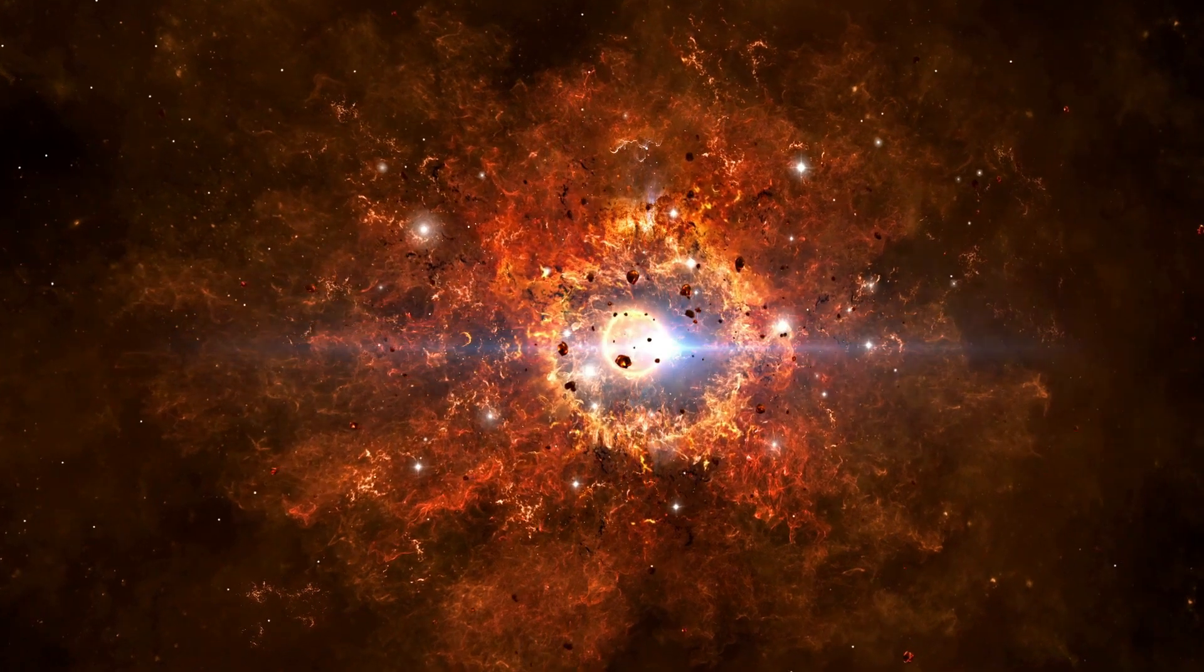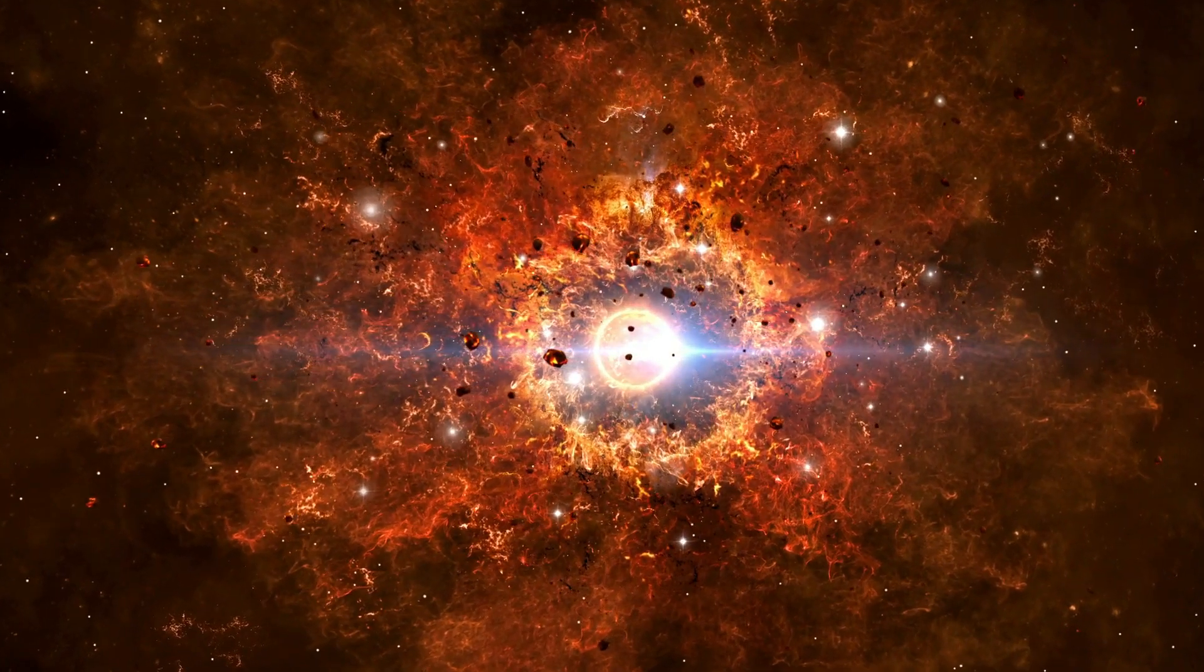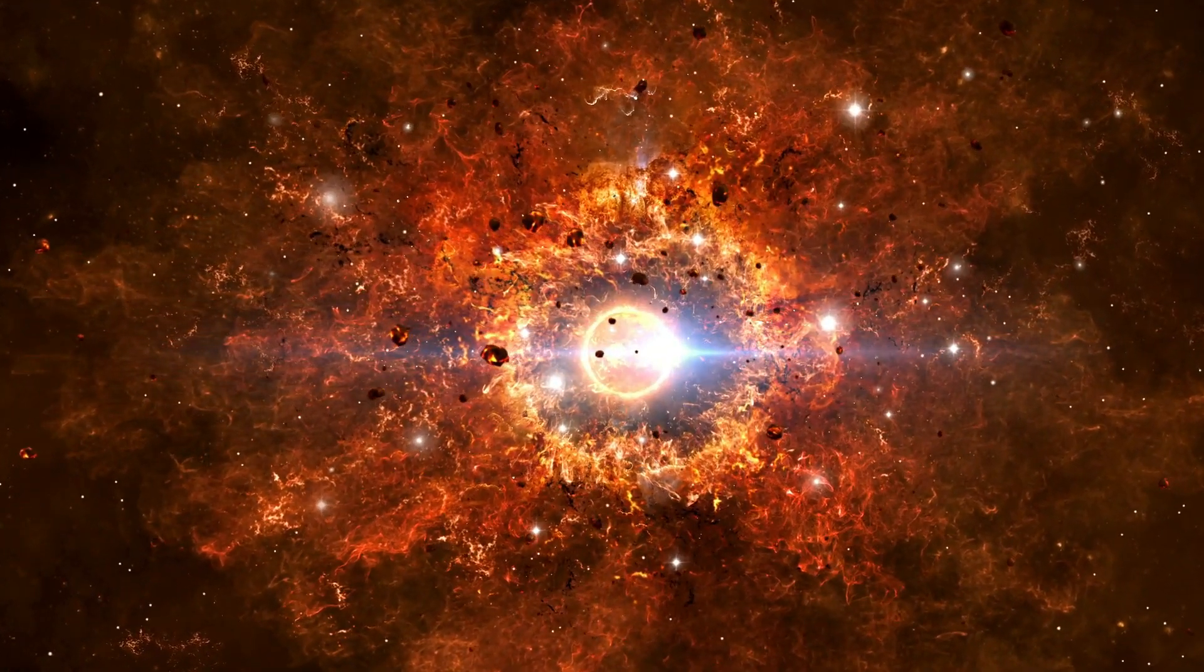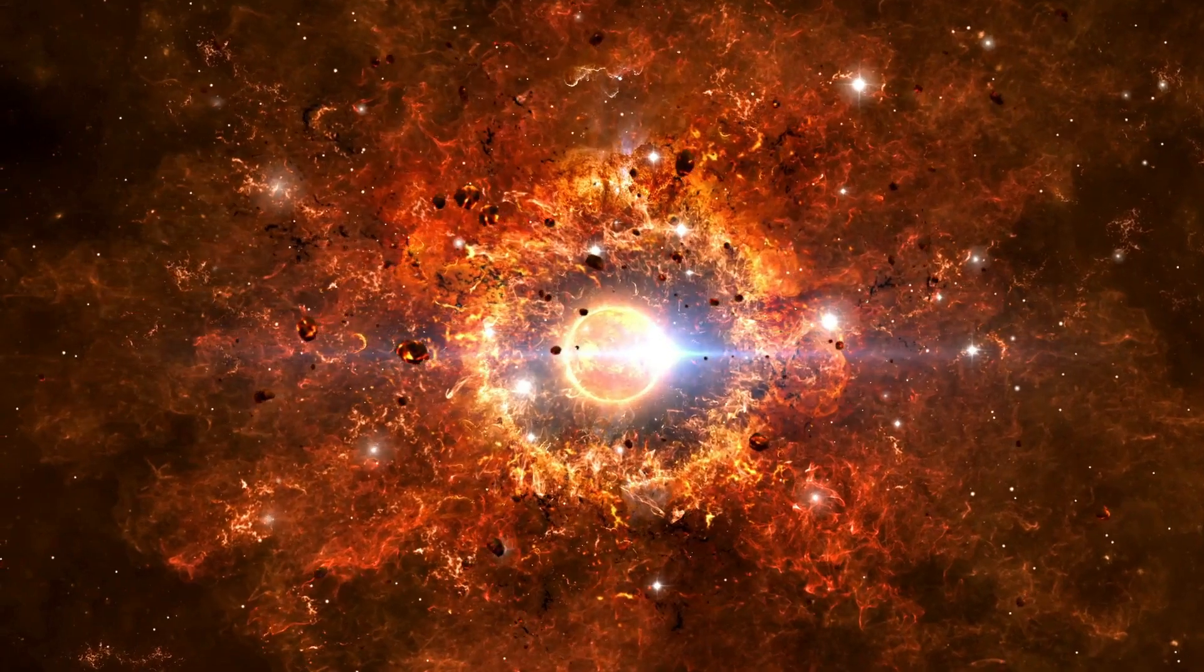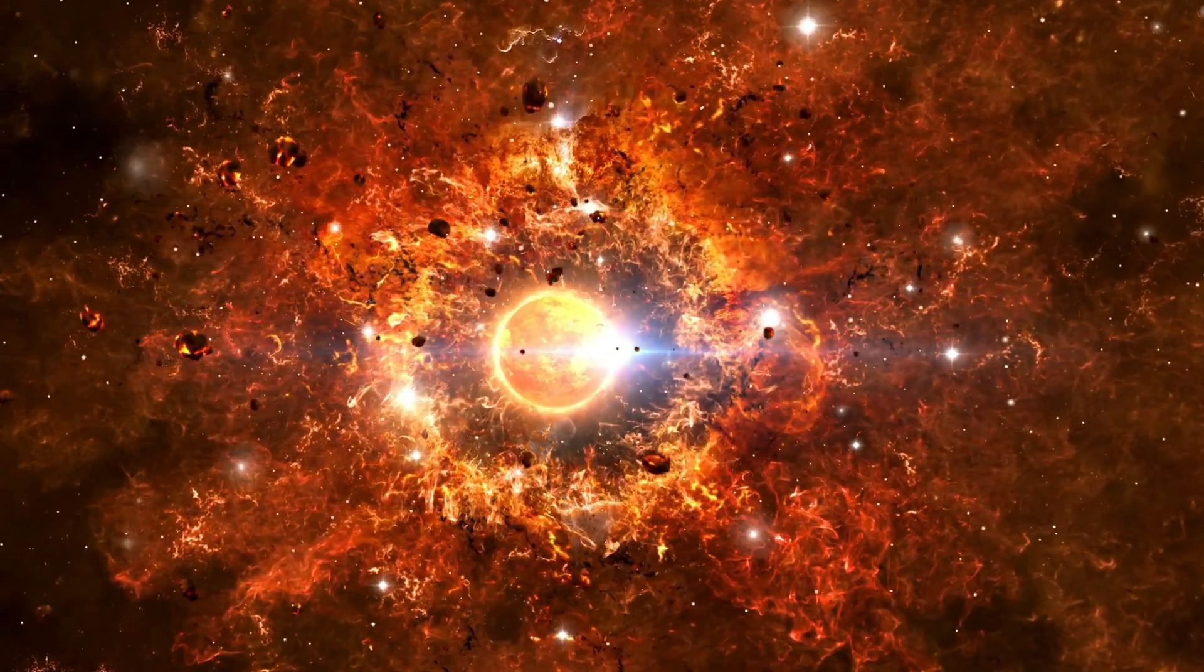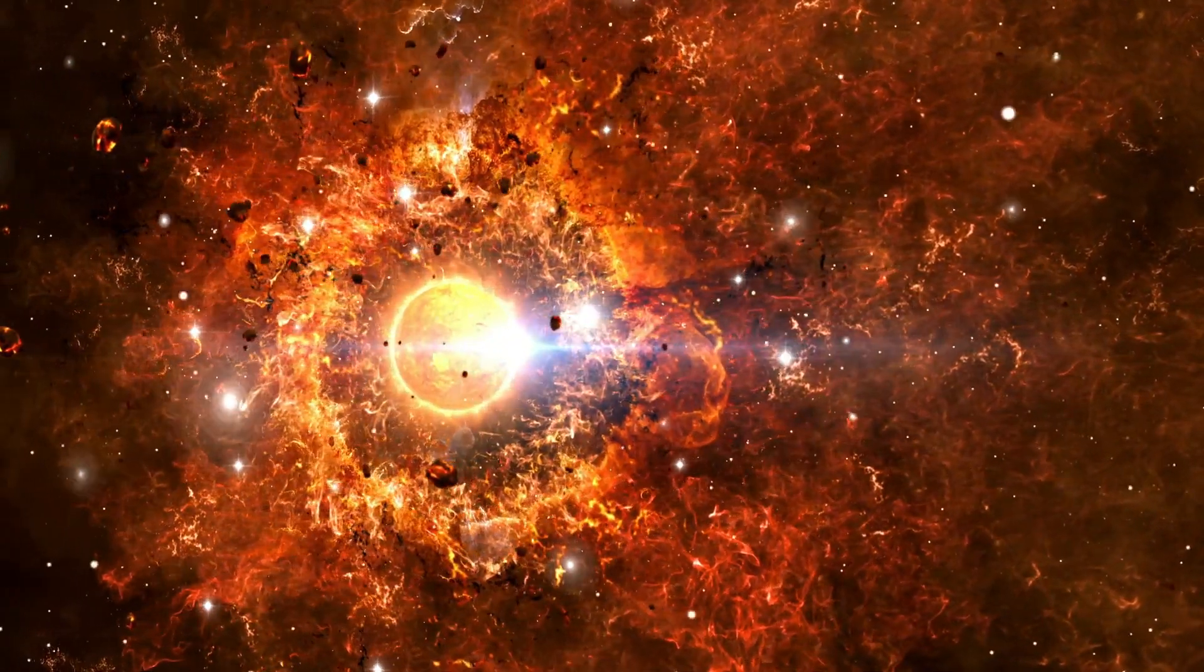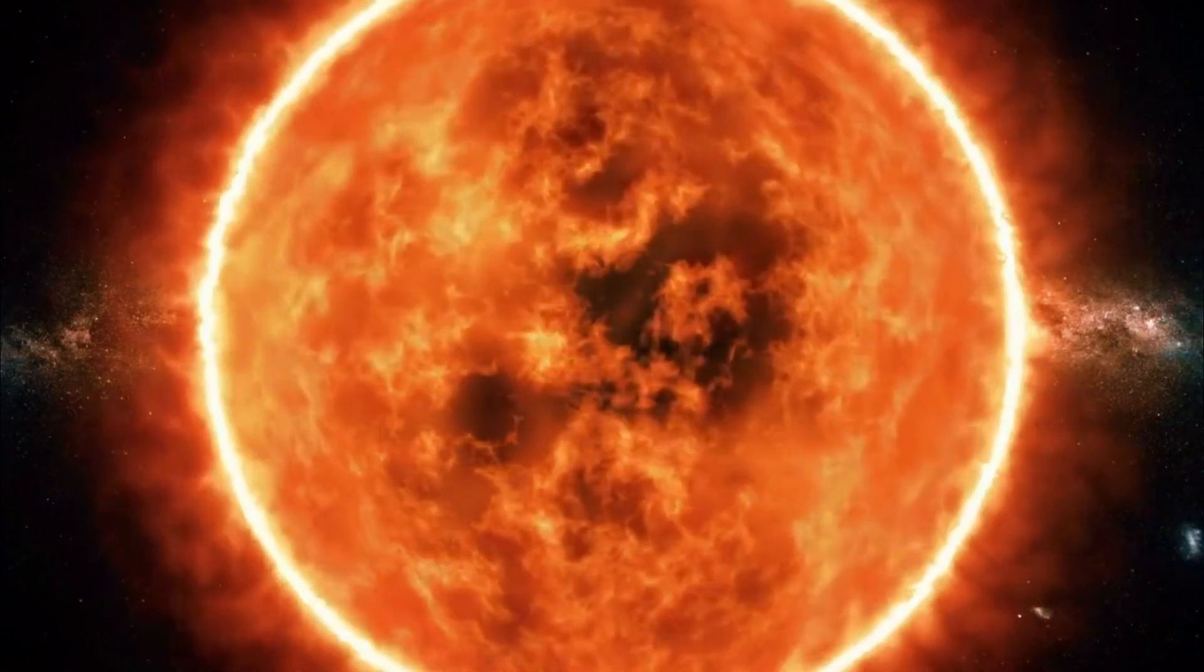Now, Betelgeuse is a red supergiant star, which means it's already in the later stages of its life. It regularly experiences variations in brightness as it expands and contracts. But this recent dimming raised some eyebrows. Could it be a sign that Betelgeuse is about to explode?